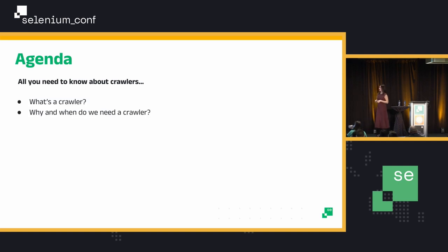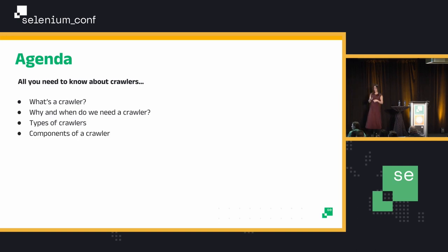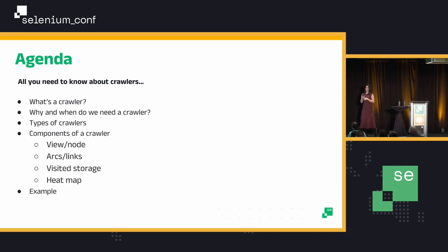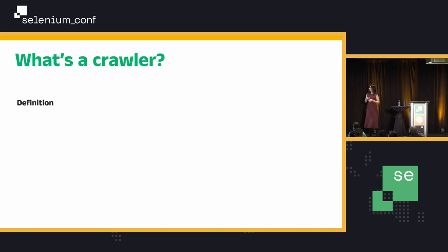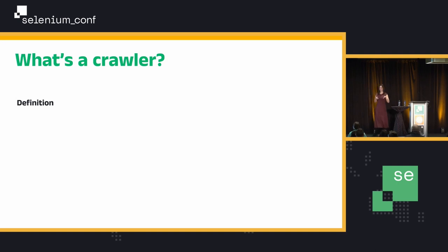We will talk about what's a crawler, why we need one and for what things, what types of crawlers there are based on my experience — so I made up these definitions — what the components of crawlers are, and we will see an example with Selenium because we're at a Selenium conference. We'll also see what can go wrong and what you need to succeed when you work with crawlers. Since we're doing this in person, we'll be a little bit interactive, so I hope you guys are awake and ready. Be ready for me to ask you questions.